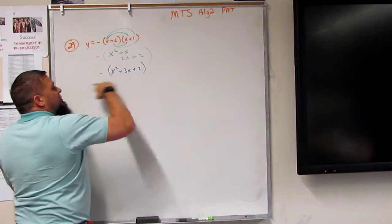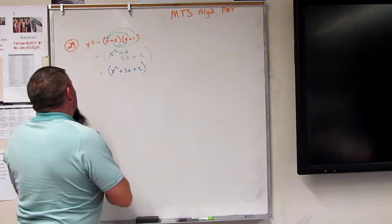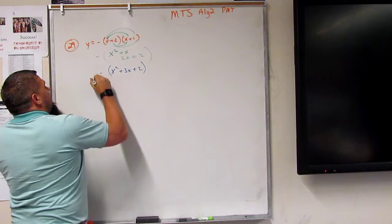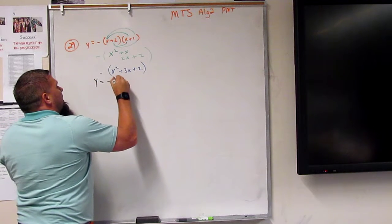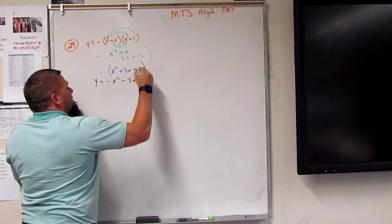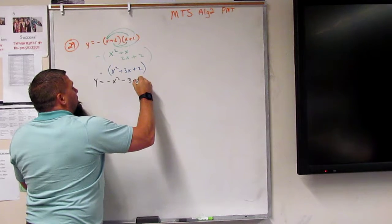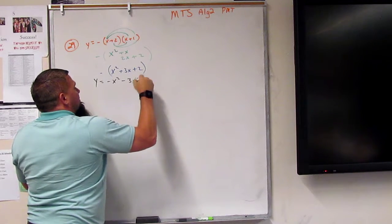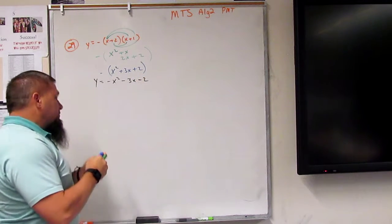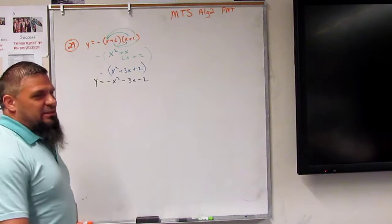Then we're going to change all their signs, right? So y is now equal to negative x squared minus 3x, minus 2. However, I just thought of something.